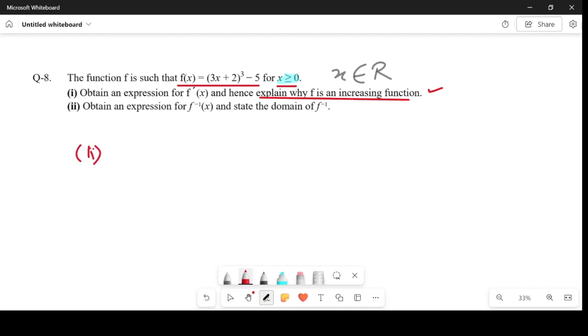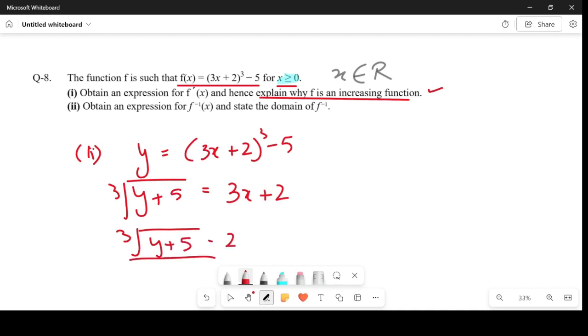We replace f(x) with y first, then make x the subject. So we get ³√(y+5) = 3x+2, then [³√(y+5) - 2]/3 = x. So the final answer is f⁻¹(x) = [³√(x+5) - 2]/3.